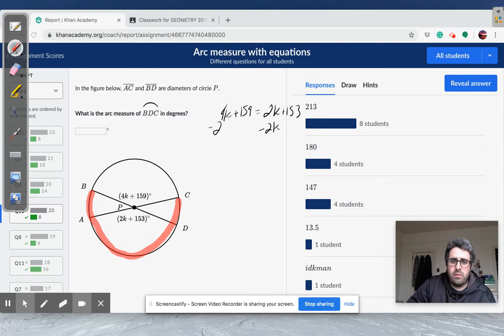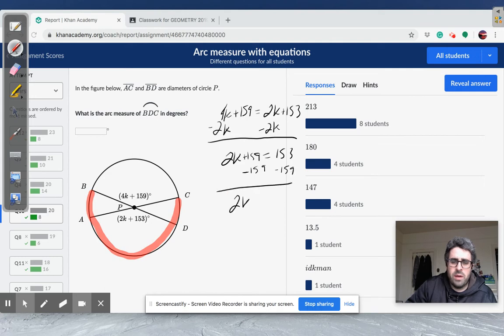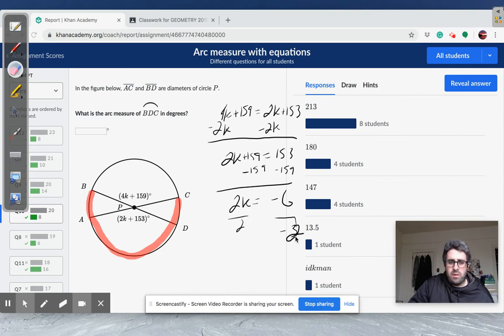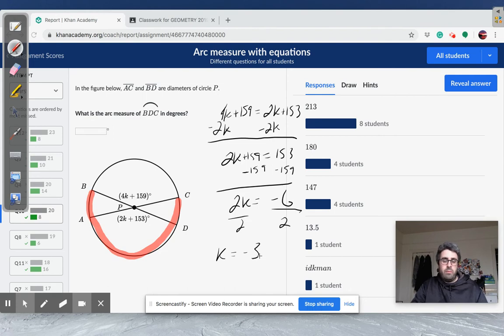I'm going to subtract 2K on both sides to get 2K plus 159 equals 153. So let's subtract 159 on both sides, which is 2K equals negative 6, which is weird. So let's see if this makes any sense. So we got 2K equals negative 6. So I'm dividing by 2 to get negative 3. So negative 3. All right. That's weird. But it will work in the context of the question. Because if we plug it in, we'll get a positive degree measure.